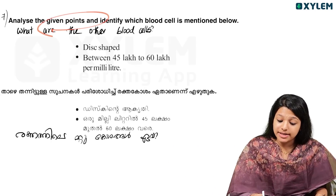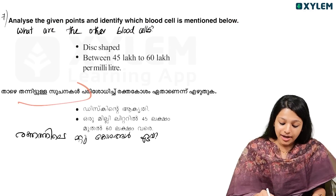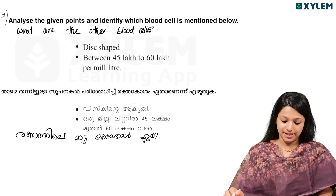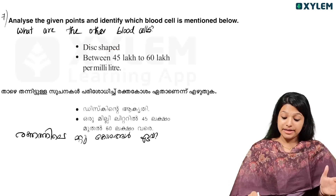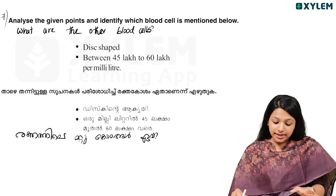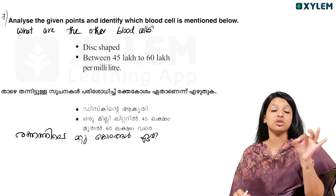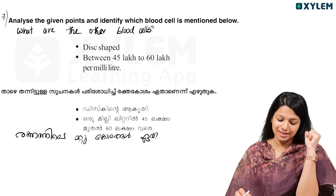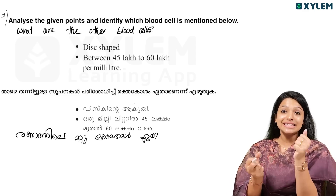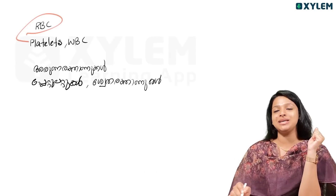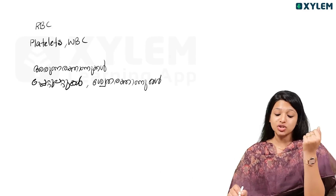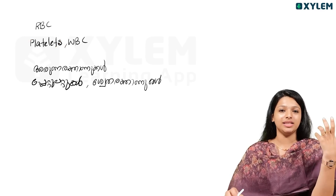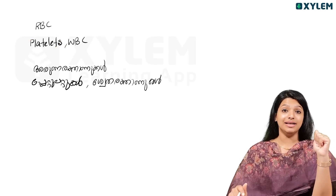Analyze the given points and identify which blood cell is mentioned. It is disc-shaped, with a count between 45 lakh to 60 lakh — that is an RBC. The others being compared include platelets and other blood cells.